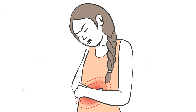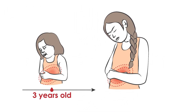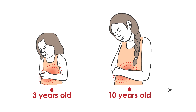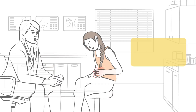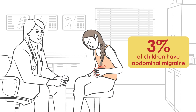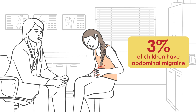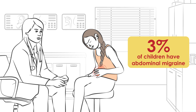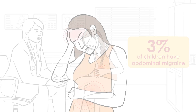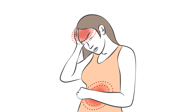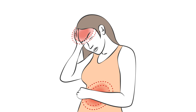Abdominal migraine is a form of migraine that occurs mostly in children aged 3 to 10. Approximately 3% of children experience abdominal migraine, but it is often misdiagnosed. Adults can also be affected by abdominal migraine, but generally migraine in adults presents with more typical symptoms like head pain.